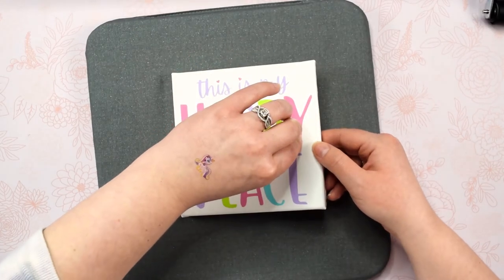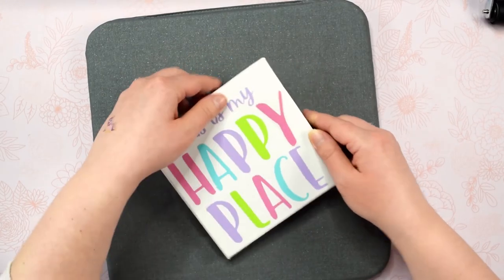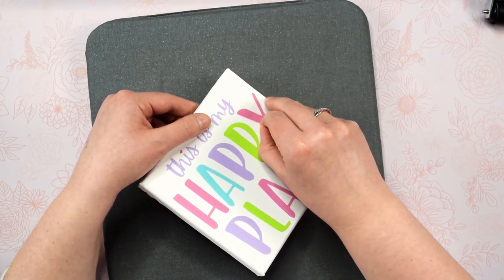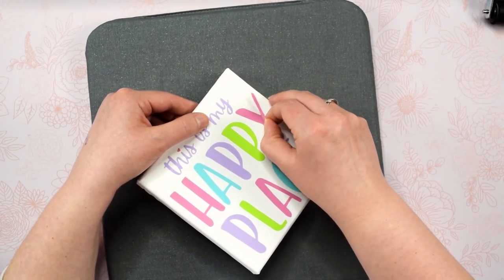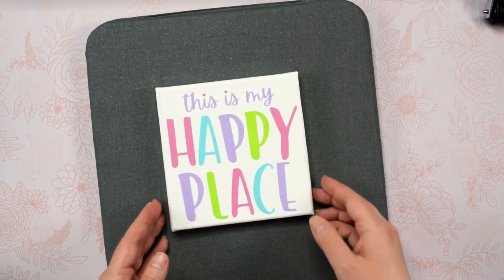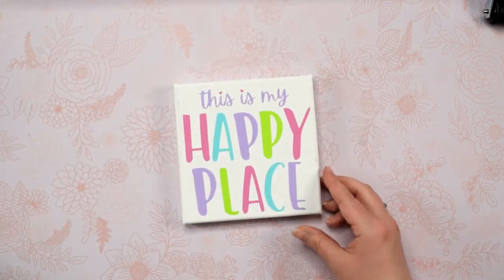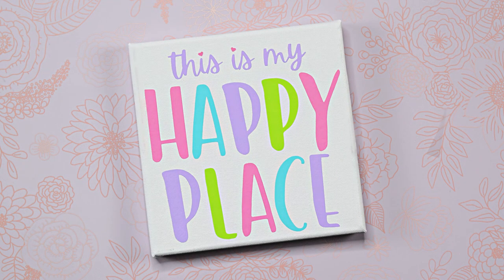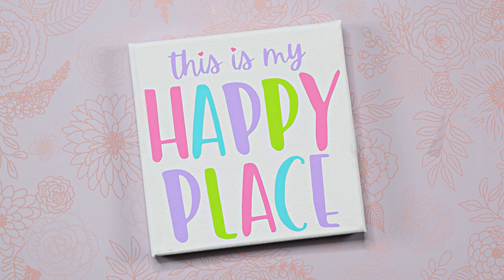In the future, if I'm doing a small canvas like this, I will probably just use my EasyPress Mini for the whole design. If I do a larger canvas, I will probably use a combination of the two like I did in this video. And there you have it! I will definitely be making more canvas signs like this using heat transfer vinyl. It was a lot of fun and I love how this little sign turned out. I can't wait to hang it up in my craft room, which is of course my happy place.